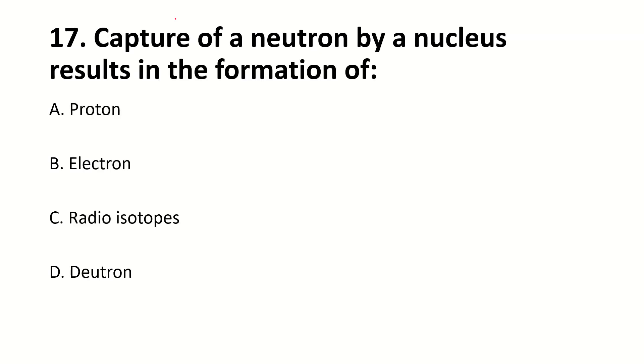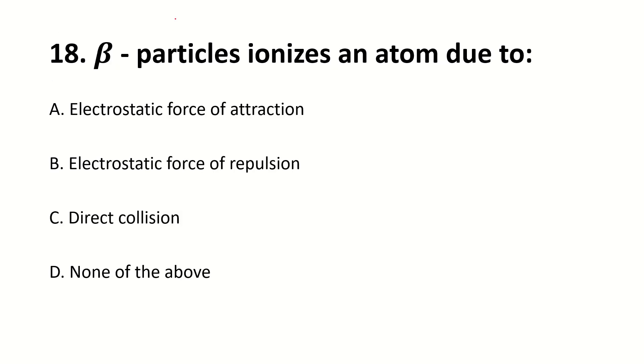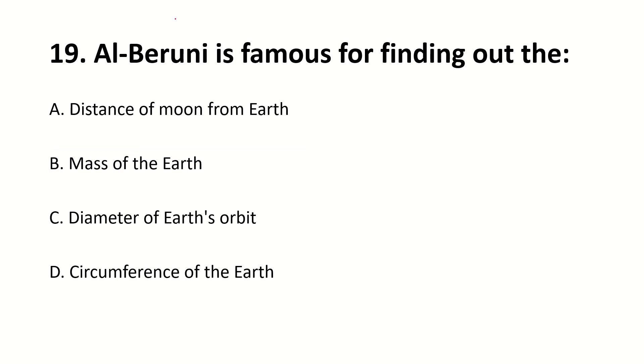Capture of a neutron by a nucleus results in the formation of dash. Right answer is radioisotopes. Beta particle ionizes an atom due to dash. Right answer is electrostatic force of repulsion. Al-Biruni is famous for finding out the dash. Right answer is circumference of the earth.